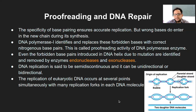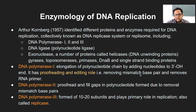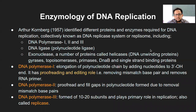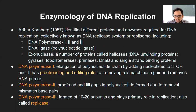The last part of DNA replication is the enzymes involved. This was identified by Arthur Kornberg around 1957, who identified different proteins as well as enzymes required for DNA replication. The whole complex of proteins and enzymes is called the DNA replicase system or it is also called the replisome.